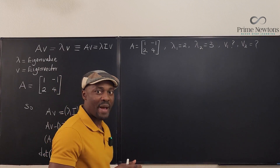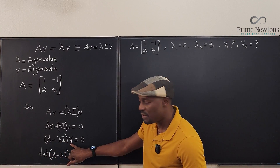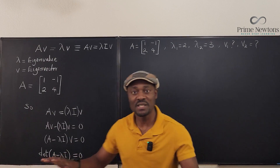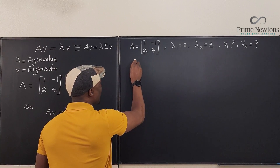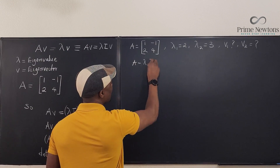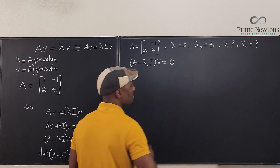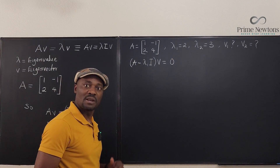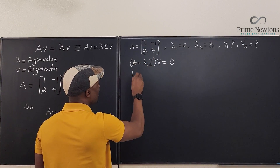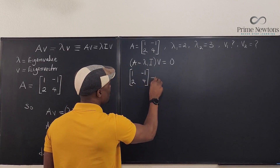To find the eigenvectors, go back to the equation (A - λI)v = 0. For each eigenvalue, substitute it in and solve for v. We don't know what v is, so let's set up: (A - λ₁I)v = 0. Our matrix A is [1, -1; 2, 4], and λ₁ = 2.